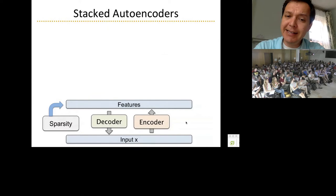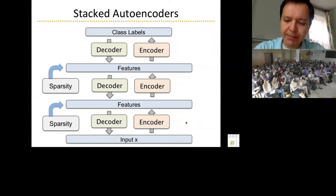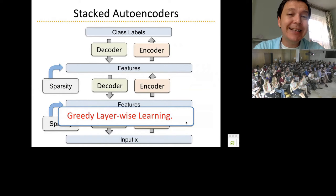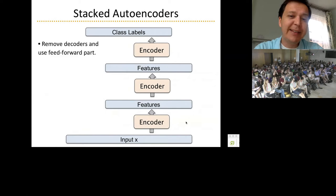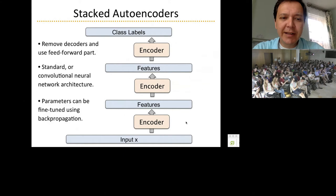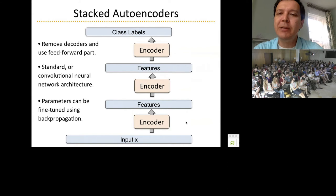You can stack these autoencoders and use them to pre-train deep networks — sometimes called greedy layer-wise learning. This is quite successful particularly when you have lots of unlabeled data and few labeled examples: you learn low-level and mid-level features in a completely unsupervised way, then follow with classification. Typically you remove the decoder and use the feedforward part to train a convolutional network, fine-tuning parameters with backpropagation. In settings with few labeled examples these models work well, but with lots of labeled examples unsupervised pre-training doesn't help much.